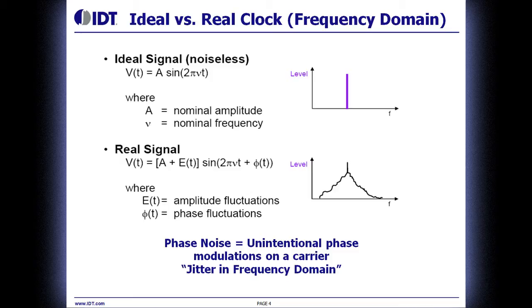The fluctuations in amplitude and the fluctuations in phase — phase noise is the unintentional phase modulation on that specific carrier frequency. It's the noise on the clock. The easiest way to think about it: it's jitter, but it's jitter in the frequency domain instead of the time domain.